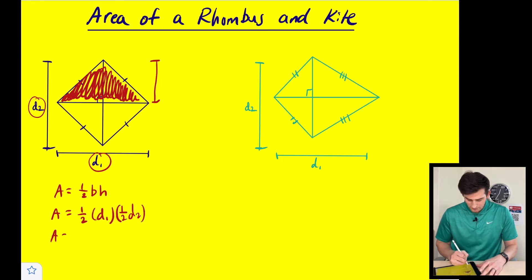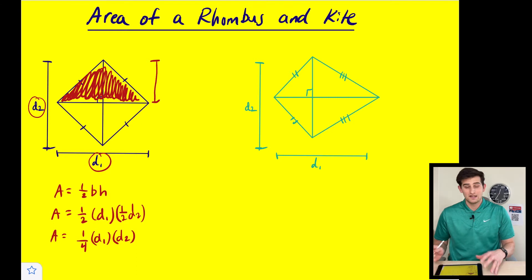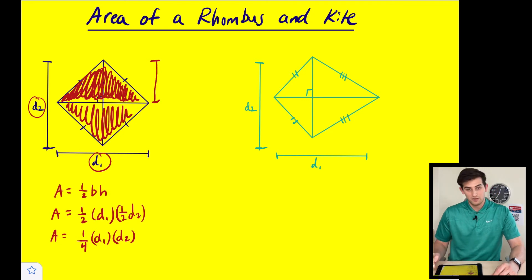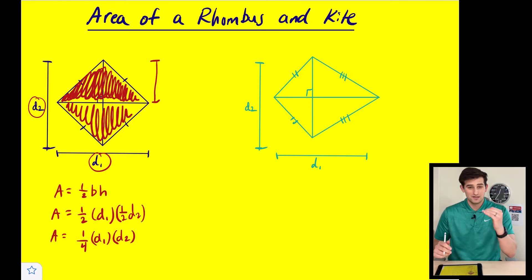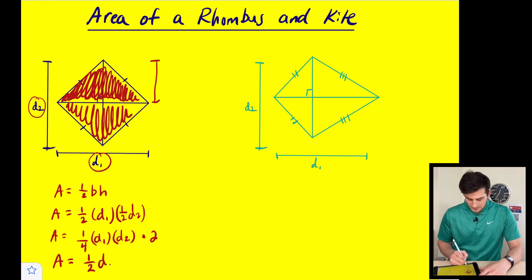If we simplify this we would have one half times one half, so this would be one fourth times diagonal number one times diagonal number two — and that's for one of these triangles. We also have a triangle down here that makes up our rhombus, so now we have two of these. Multiplying by two gives us two fourths, which simplifies to one half times diagonal one times diagonal two. So this is our formula for the area of a rhombus.